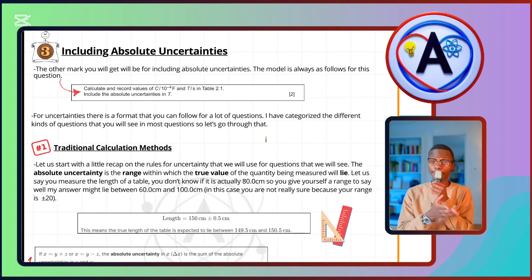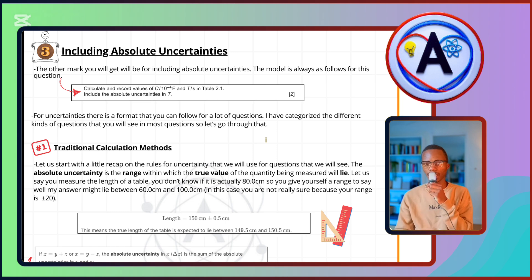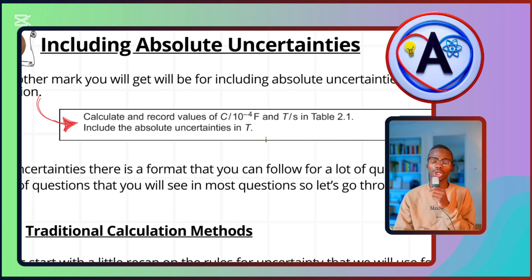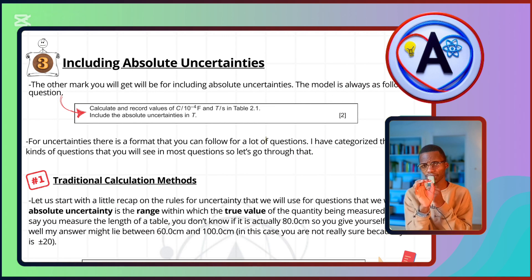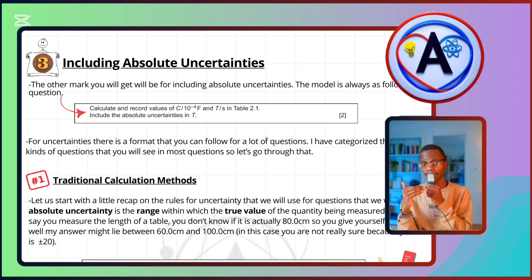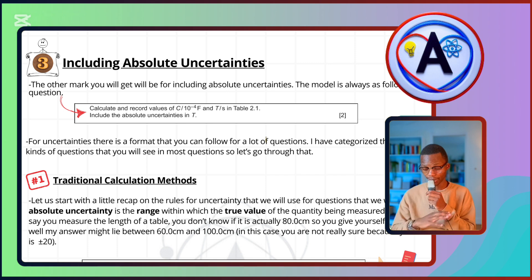We talked before that you're supposed to calculate and record values — for example for c, for t, for log m, for log l, and so on. Now you always see a part that follows underneath when you're doing Paper 5 Question 2 that says 'include the absolute uncertainties.' It's always going to be for one quantity, not both — just one.